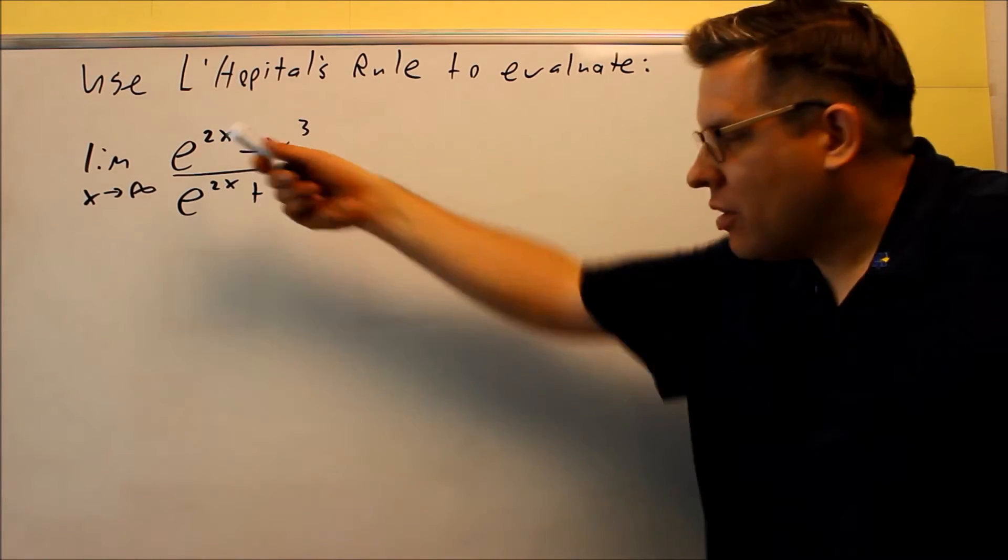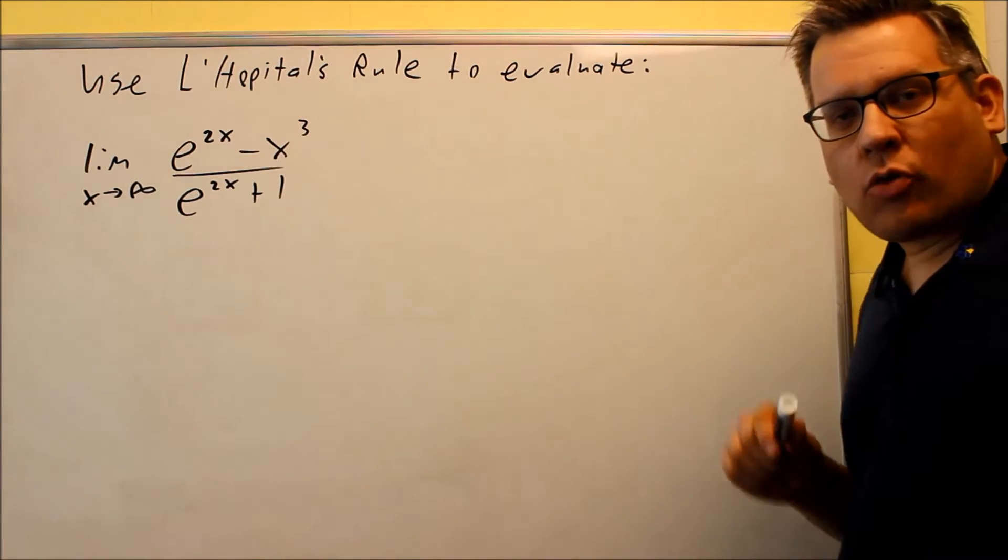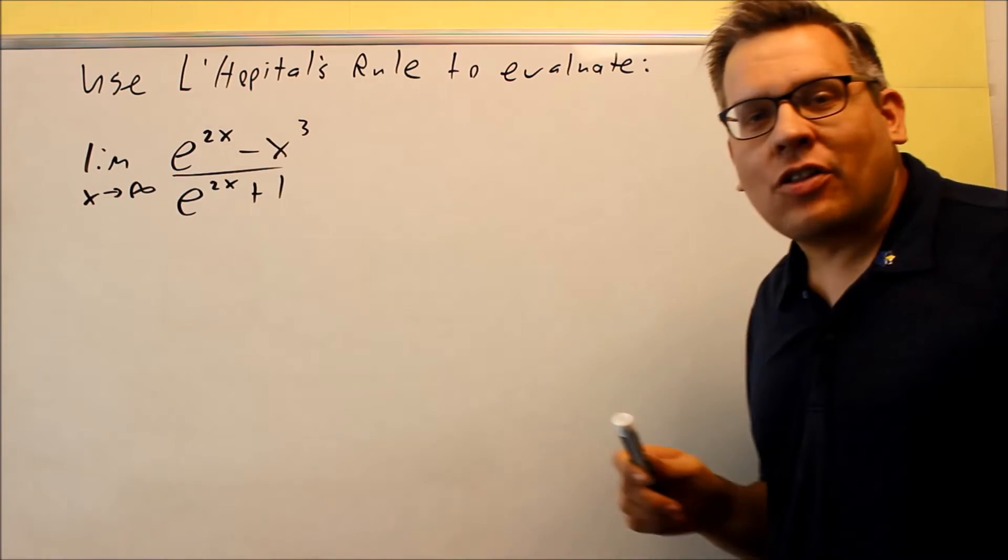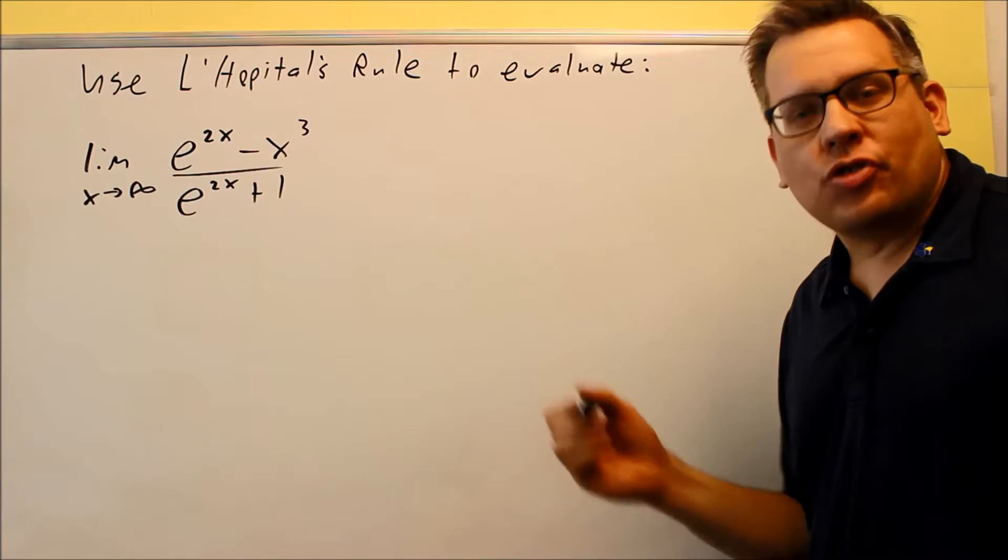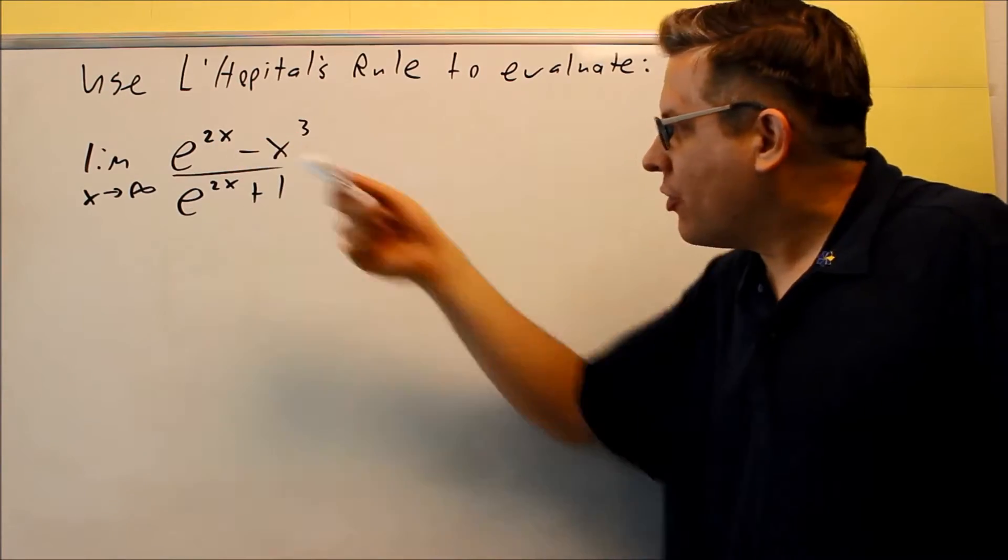This time we have a problem that involves e. Remember whenever you take the derivative of e to the u, the derivative we're using is e to the u times u prime, and that's what we're going to be applying for this problem here.